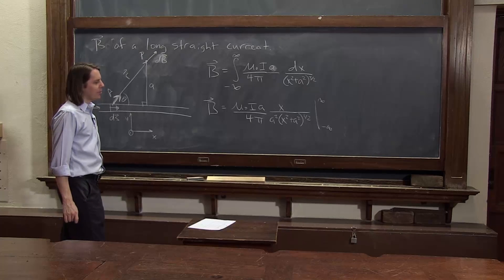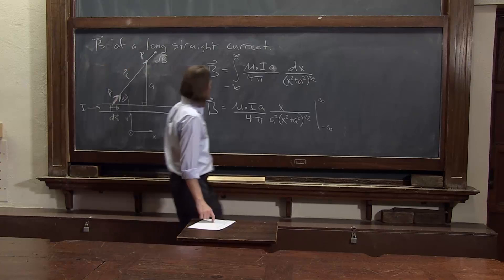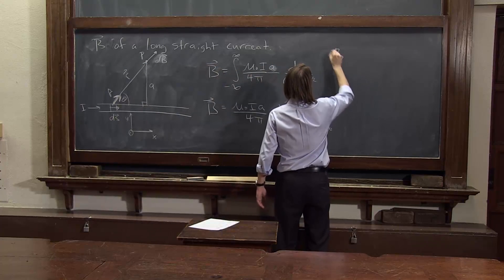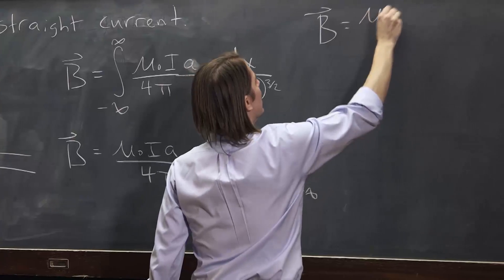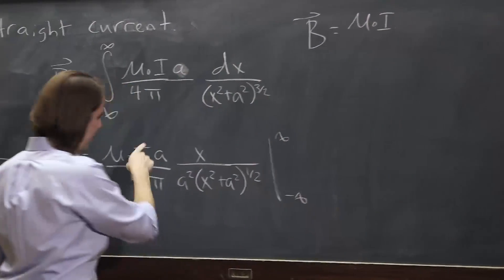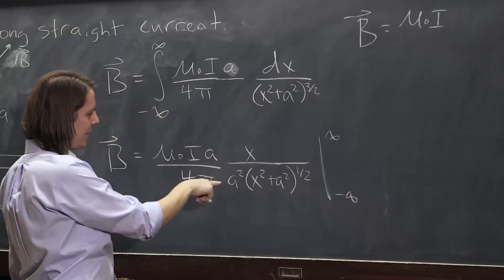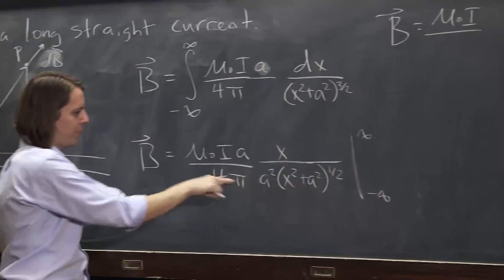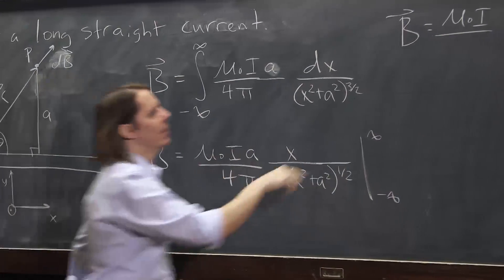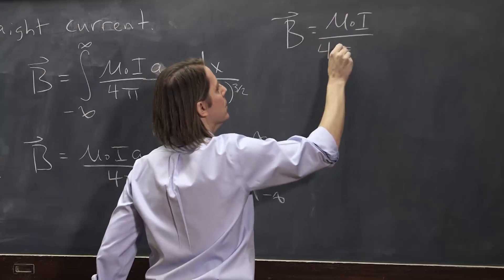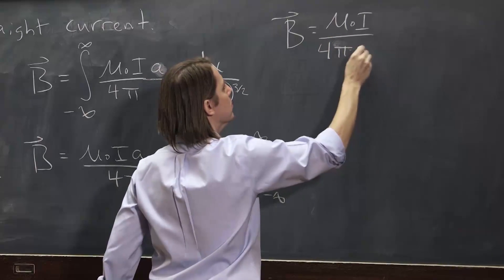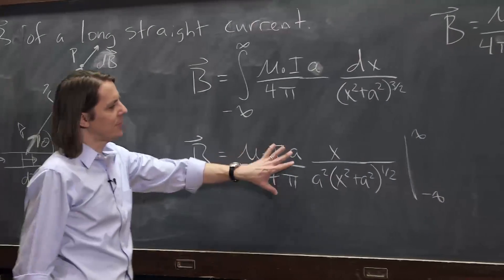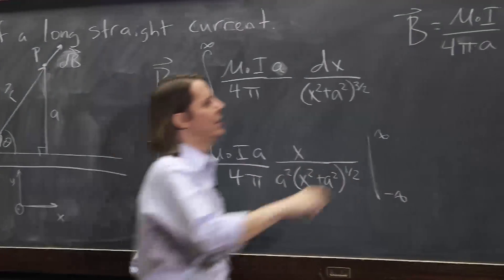So now we have to plug in our limits to get B. B equals mu-naught I — and we can see one of those A's goes away. Basically, this A is now in the bottom, over 4 pi A. This A stays and that one gets canceled with the other one. We're going to keep this on the outside and plug in infinity and minus infinity.